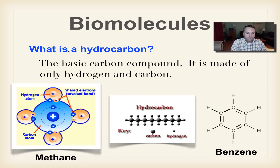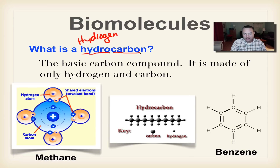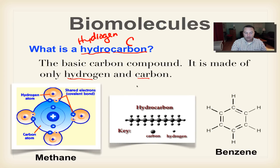So let's learn about hydrocarbons. The name hydrocarbon pretty much tells you what it's made out of. The 'hydro' part refers to hydrogen, so this one's going to have a lot of hydrogens in it. And obviously 'carbon' refers to the element carbon, which has a symbol of C. So a hydrocarbon is only made out of two things: hydrogen and carbon. The simplest hydrocarbon is methane.